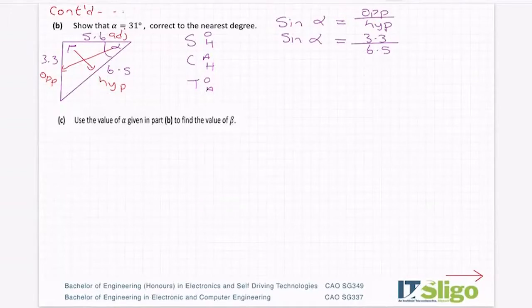Okay, so I don't want sine of alpha, I want alpha the angle, so I need to get rid of this sine. So the opposite of sine is sine inverse. So what I do to one side, then I have to do to the other. But by doing that, sine and sine inverse cancel. So you're left with alpha being equal to the sine inverse of 3.3 over 6.5.